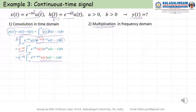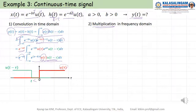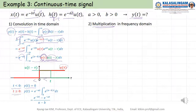Now pay attention to this term. You can see u(τ) here. And u(t - τ) means when t is less than zero, this term — the green and red product — is zero. When t is greater than zero, the upper limit of τ goes to t. Then from this we can get the result. This is for t greater than zero, and you can also write it this way.